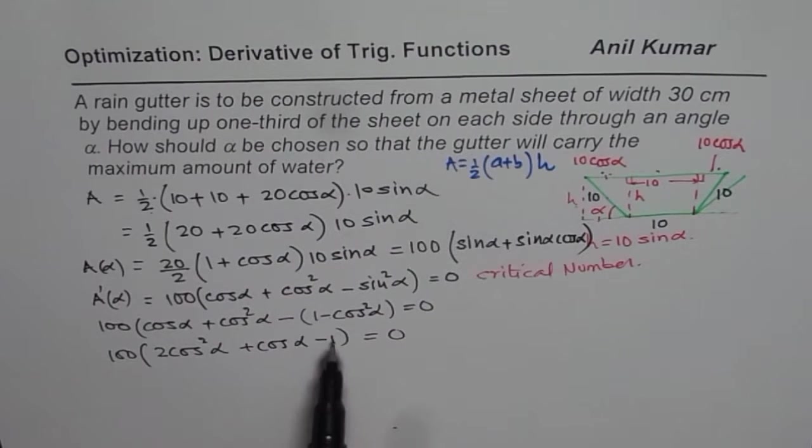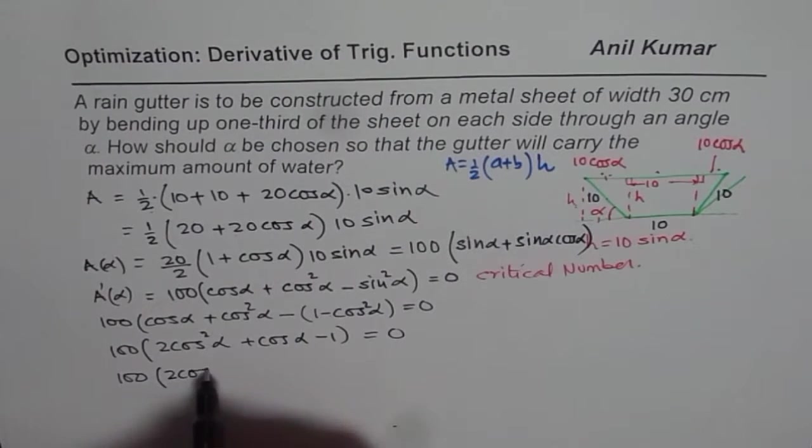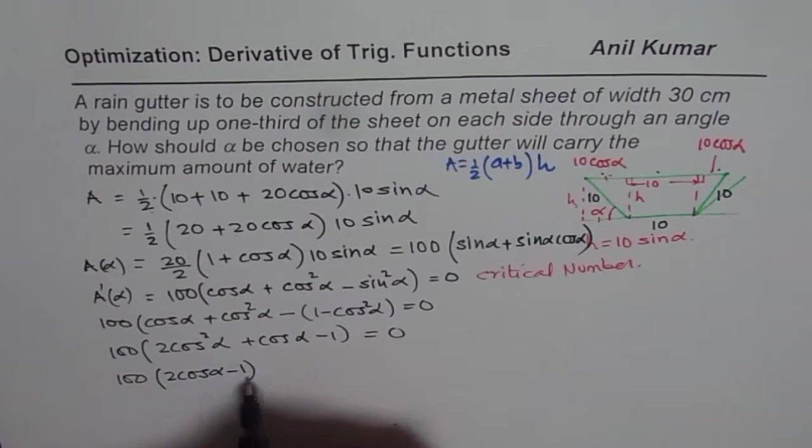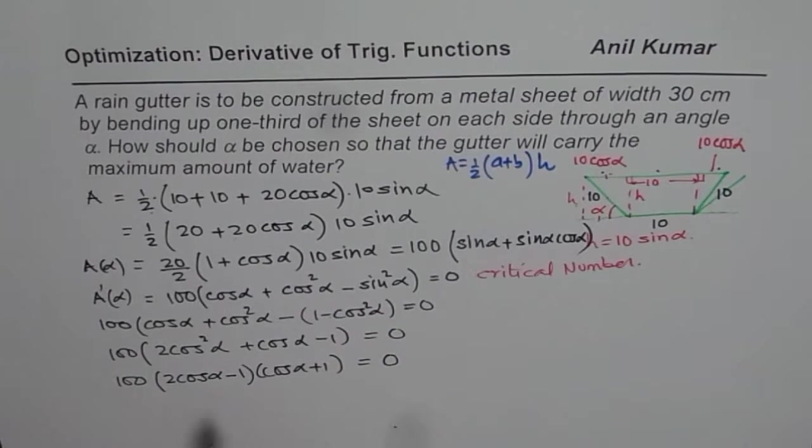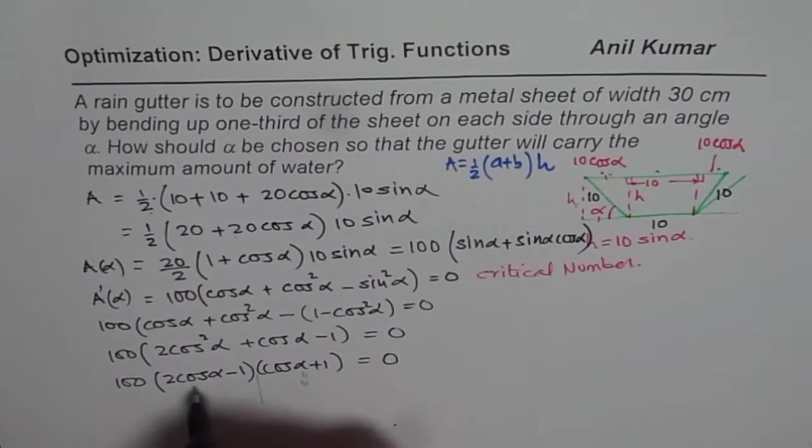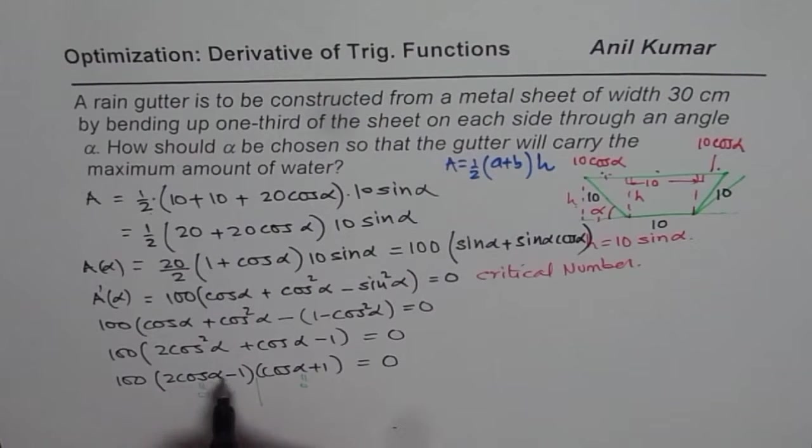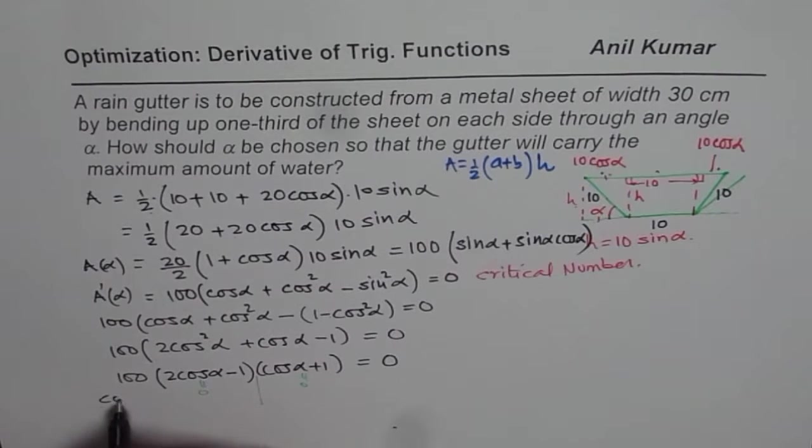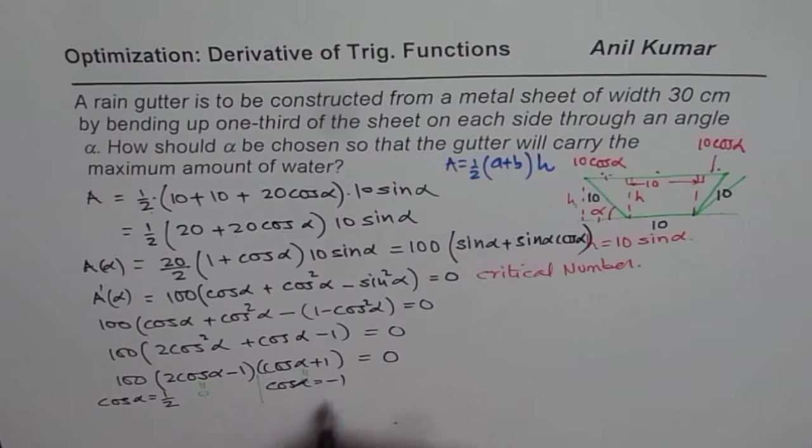Opening the bracket and rearranging, we have 2 cos square alpha plus cos alpha minus 1 equals to 0. We are looking for a product of minus 2 sum of 1. When you factor this, you get 2 cos alpha minus 1 times cos alpha plus 1 equals to 0. So we get cos alpha equals to half and cos alpha equals to minus 1.